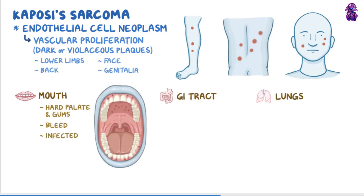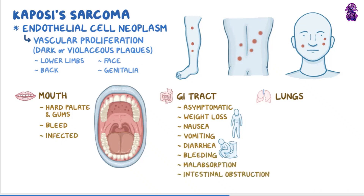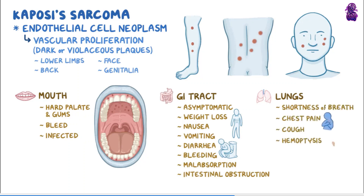Involvement of the GI tract can be asymptomatic, or it can cause weight loss, nausea, vomiting, diarrhea, bleeding, malabsorption, or intestinal obstruction. When the lungs are involved, that can cause shortness of breath, chest pain, cough, and hemoptysis, which means coughing up blood.